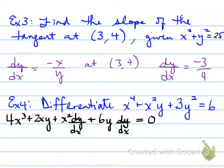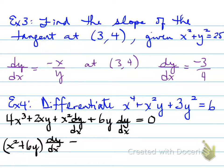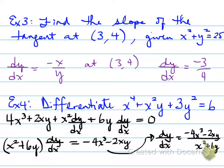Now what do we do? We keep the dy/dx terms on one side, and all the other stuff goes on the other side. We common factor the dy/dx: so (x squared plus 6y) times dy/dx equals negative 4x cubed minus 2xy. Divide both sides by (x squared plus 6y), so dy/dx is equal to negative 4x cubed minus 2xy, all over x squared plus 6y. And that, folks, is the end of example number 4.